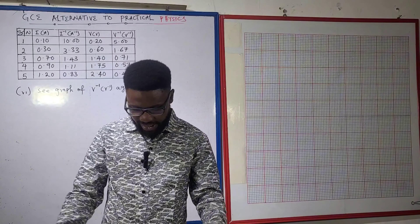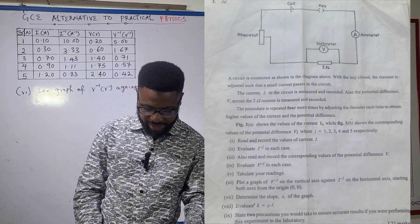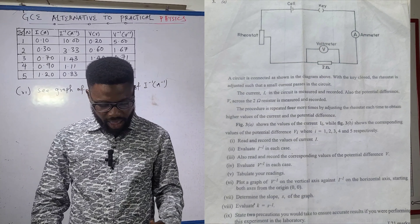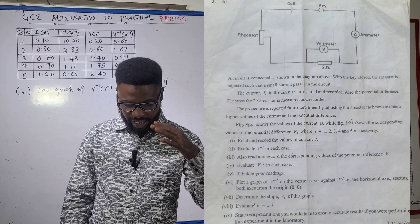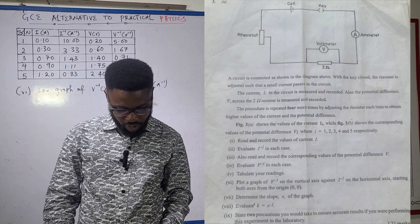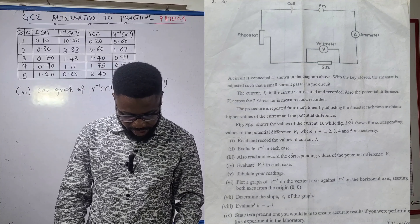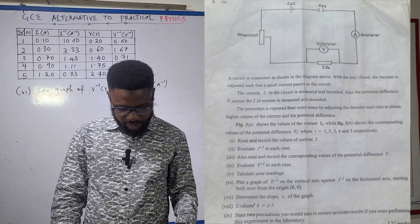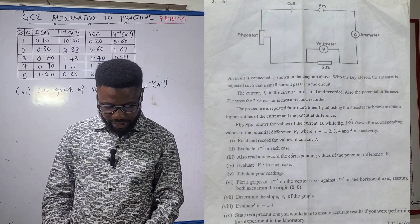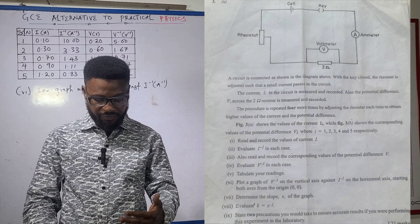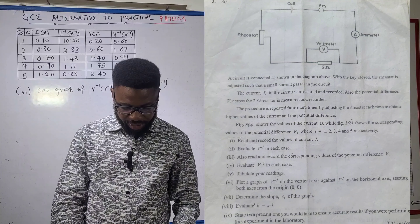The experiment we have here is on electricity — it talks about a circuit. A small current passes through the circuit as displayed on your screen. We were told to read and record the values of the current, and this experiment was performed repeatedly five times so that we get accurate values.